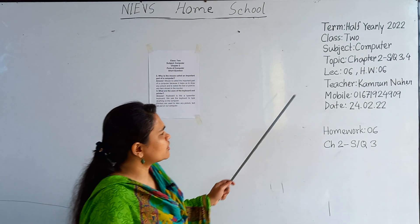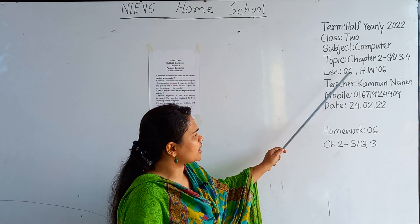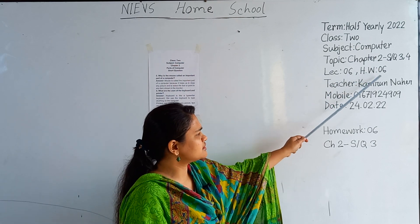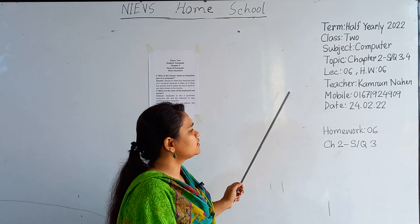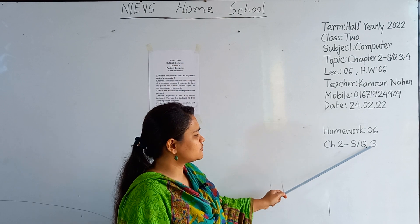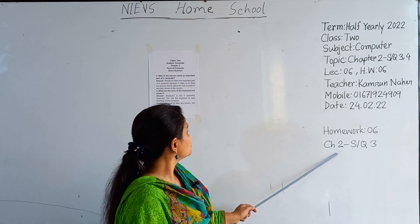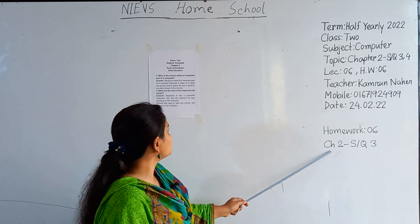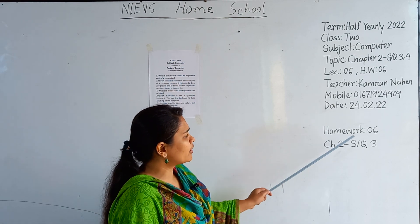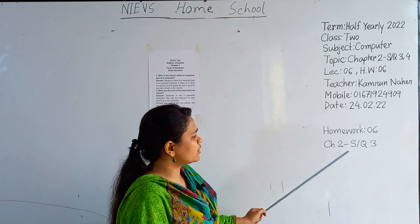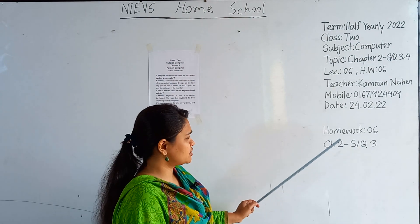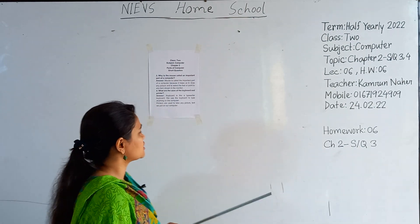This is Lecture 6 and Homework number 6. You will do short question number 3 as your homework from Chapter 2. The name of this chapter is 'Parts of Computer.' Homework number 6 will be SQ number 3 from Chapter 2. So let's start our class.